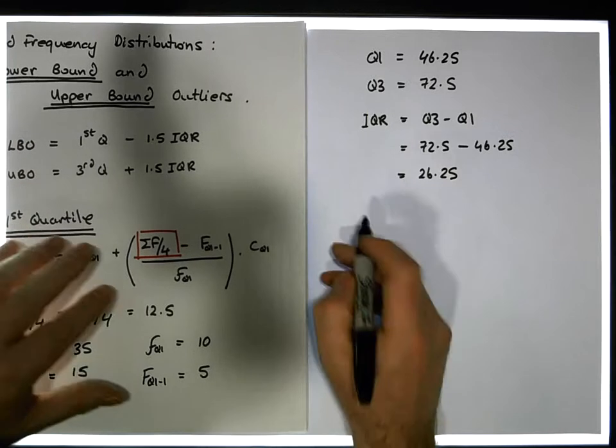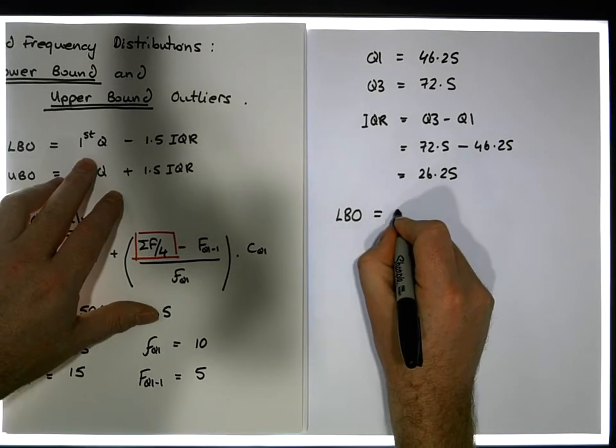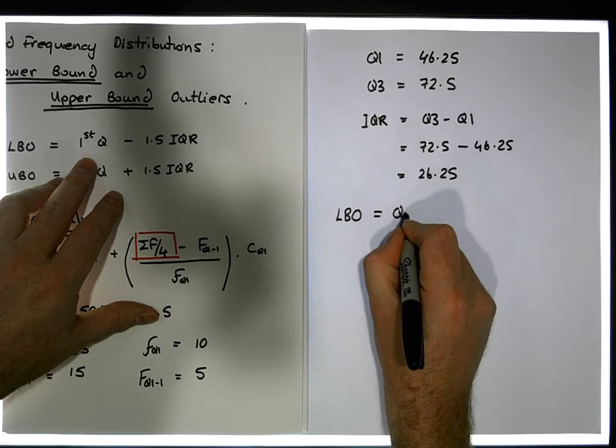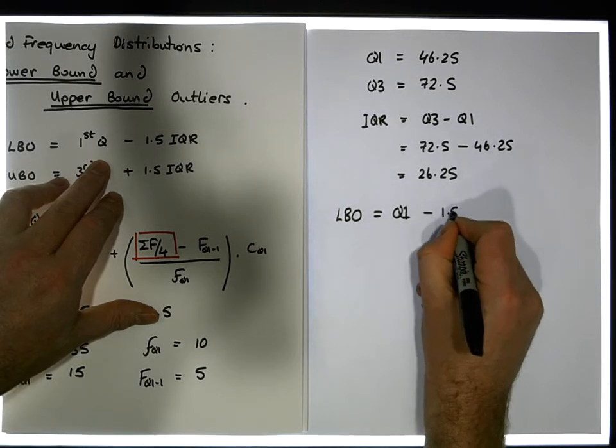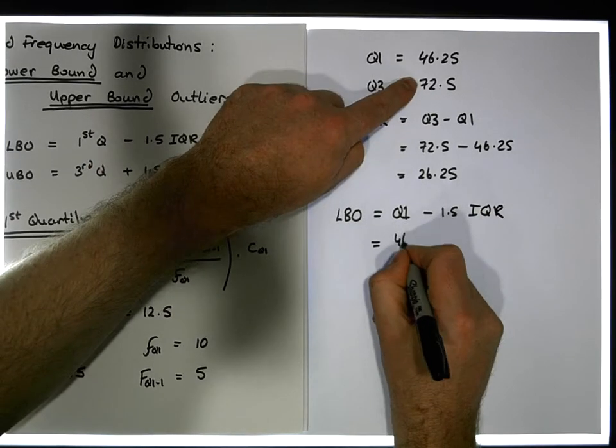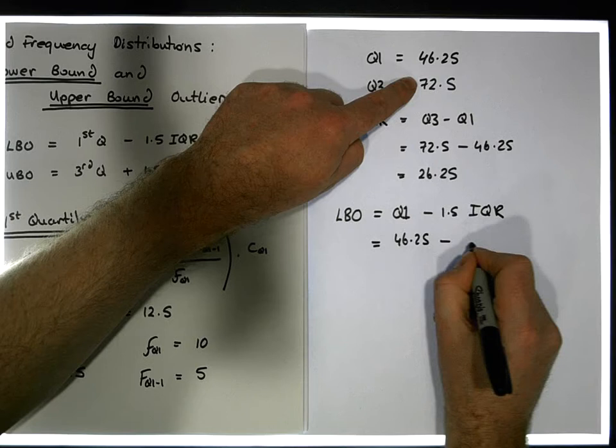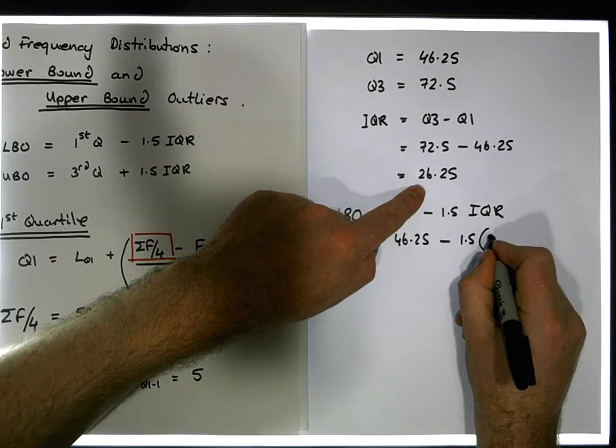So our lower bound outliers are equal to, as I said, they're equal to Q1, the first quartile, so Q1 minus 1.5 times the interquartile range. So Q1 is 46.25, and I need to take away from that 1.5 times the interquartile range, which we just calculated to be 26.25.